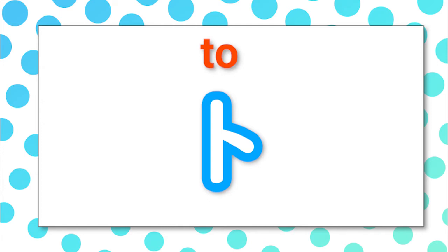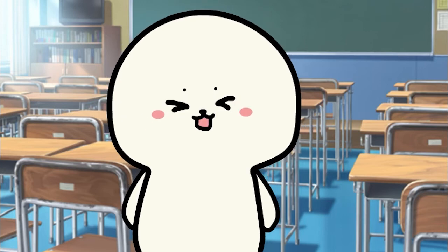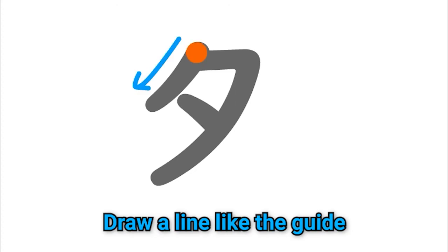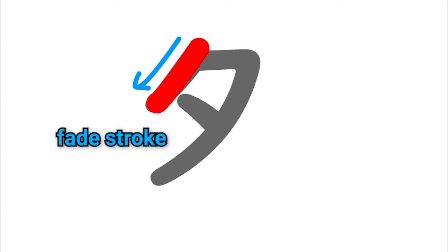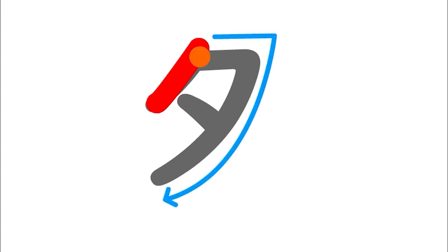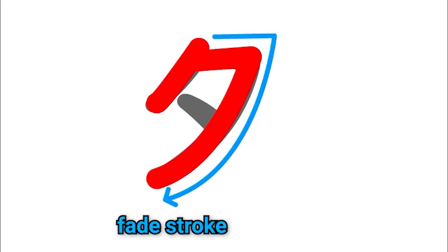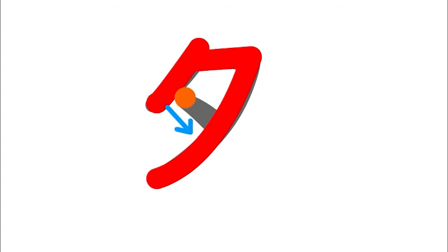た、た、ち、つ、つ、て、と. Here's how to write them! First letter is ta. Let's write like the guide. 1. Finish with a fade stroke. 2. Phase stroke. 3. Stop! This is ta.